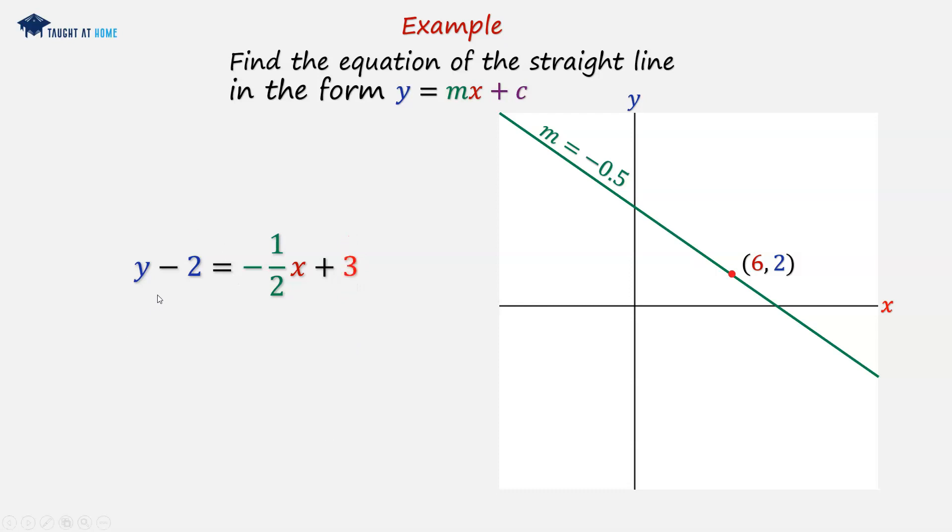We need to isolate y so we can add positive 2 to both sides, because the minus 2 and the positive 2 cancel out, and on the right hand side, 3 plus 2 is 5.